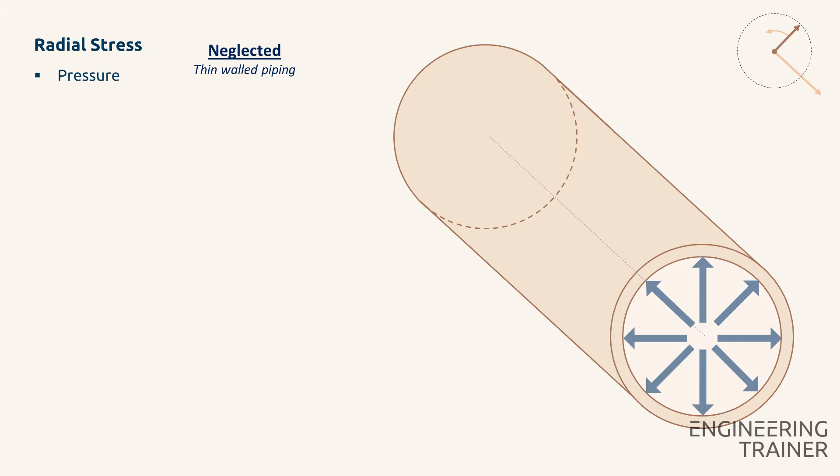It is important to realize that only the pressure load causes an overall radial stress in our piping geometry. No other load will result in such an overall radial stress. It is only the pressure load that contributes, and we already concluded that this contribution can be neglected, so we will set it to zero.